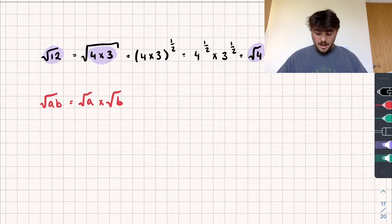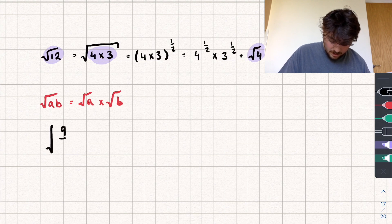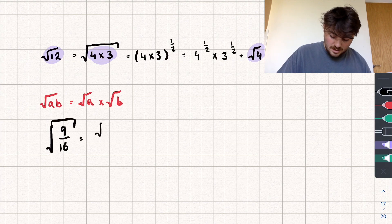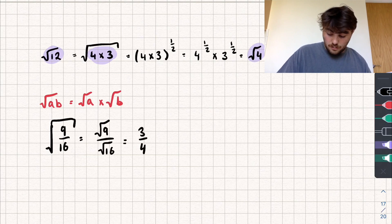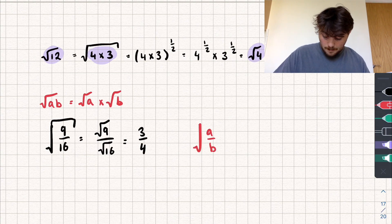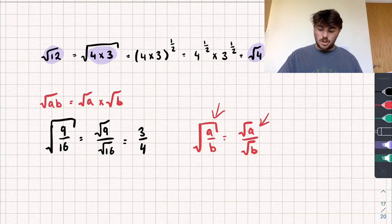The next rule involves fractions. Say we were looking at the square root of 9 over 16. We can distribute the square root across the numerator and denominator, so this equals the square root of 9 over the square root of 16, which gives us 3 over 4. In the generic case, the square root of A over B equals the square root of A divided by the square root of B. You could use your laws of indices to show that this is true.